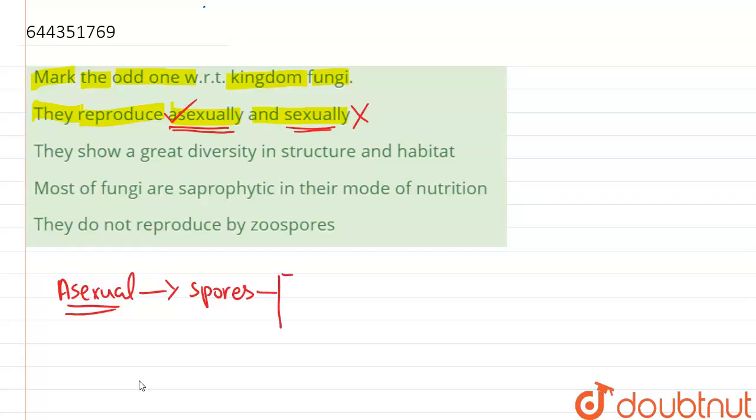Sporangiospores are present. Now they also show a kind of vegetative reproduction, which is an example of asexual reproduction only.